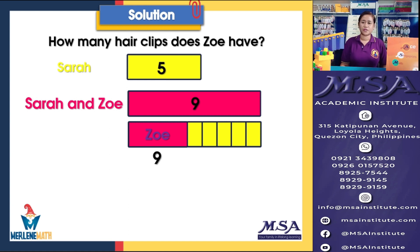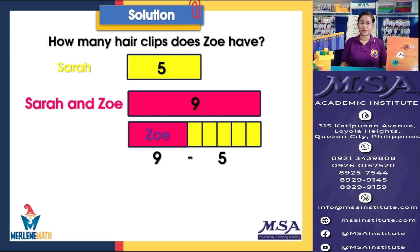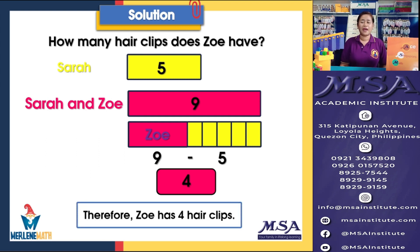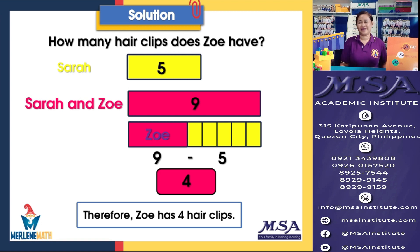Let's solve. We have nine hair clips for Sarah and Zoe. For us to know the number of hair clips for Zoe, we are going to subtract the number of hair clips owned by Sarah. Nine minus five will give us four. Therefore, Zoe has four hair clips. In this challenge problem, we compared the hair clips of Sarah and Zoe. Using our block method, it is very easy for us to compare, and the operation to be used will be identified.